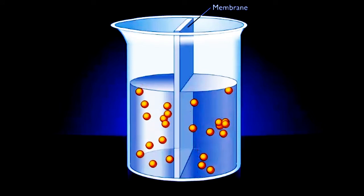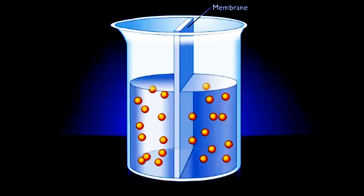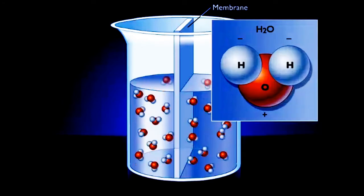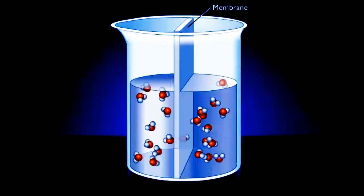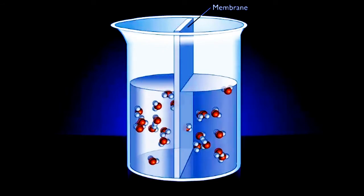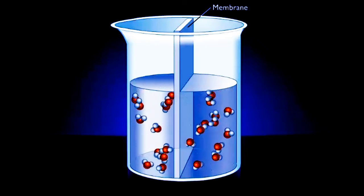Most polar molecules, such as sugars and proteins, cannot freely cross this lipid membrane. Although water molecules are polar, they are small enough to pass through the membrane freely. This special case of diffusion that involves the movement of water molecules across a membrane is called osmosis.